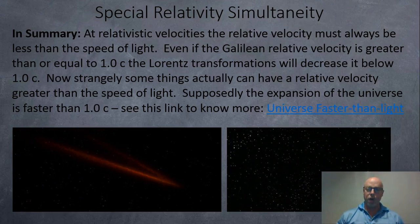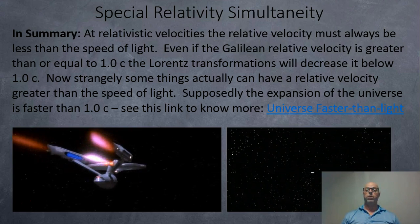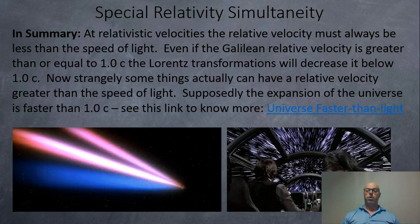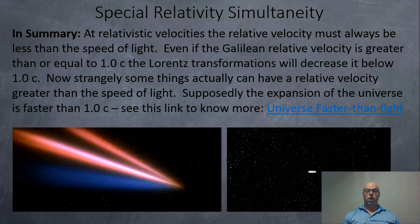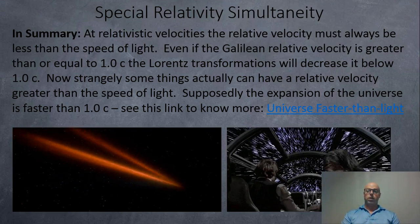In summary, at relativistic velocities, the relative velocity must always be less than the speed of light. Even if the Galilean relative velocity is greater than or equal to 1 C, the Lorentz transformation will decrease it below 1.0 C. The speed limit is the speed of light, and nothing can reach that except for light. If you get something faster than the speed of light, you made a mistake. Now strangely, some things actually do have relative velocity greater than the speed of light. Supposedly the expansion of the universe is faster than the speed of light, which is odd. If you want to know more about that, click on this link, and you can find out more about it in Wikipedia.